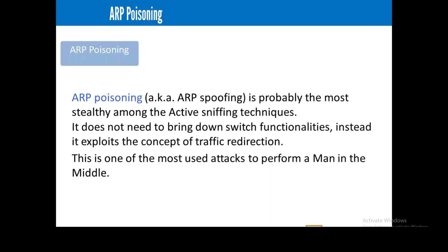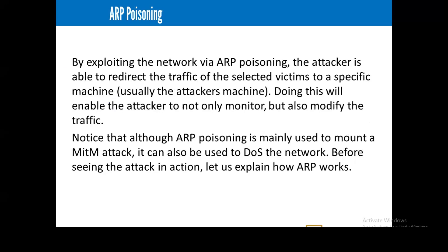Let's talk about ARP poisoning. This is the most stealthy among the active sniffing techniques. It does not need to bring down switch functionality. Instead, it exploits the concept of traffic redirection. This is one of the most used attacks to perform a man-in-the-middle attack. By exploiting the network via ARP poisoning, the attacker is able to redirect the traffic of selected victims to a specific machine — usually the attacker's machine — enabling the attacker to not only monitor but also modify the traffic. Although ARP poisoning is mainly used to mount a man-in-the-middle attack (MITM), it can also be used to sniff the network before carrying out further attacks.